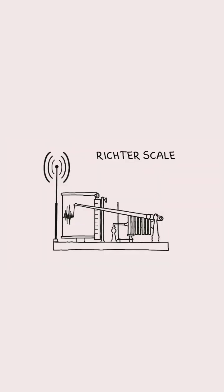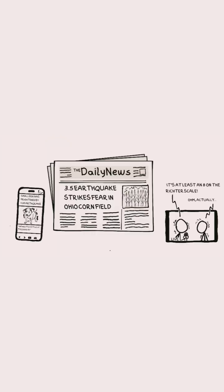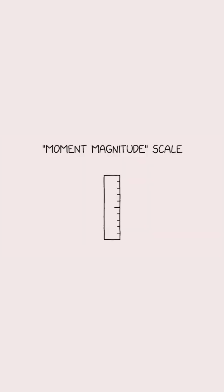The Richter scale, which has technically been replaced by the moment magnitude scale, measures the strength of an earthquake. Since we usually hear about earthquakes with ratings somewhere between 3 and 9, a lot of people probably think of 10 as the top of the scale and 0 as the bottom. In fact, there is no top or bottom to the scale.